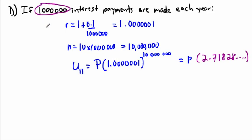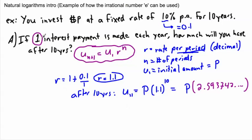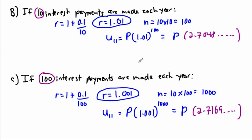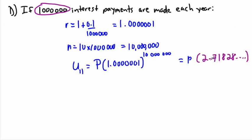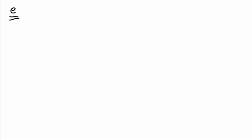Look at what happens: with 1 payment per year we get P times 2.5937; with 10 payments, 2.7048; with 100 payments, 2.7169; with a million, 2.71828. As I increase the number of payments toward infinity — quadrillions of them — the multiplier gets closer and closer to 2.71828, which keeps going. That number is what we write as the letter e, approximately equal to 2.71828.